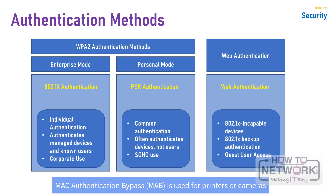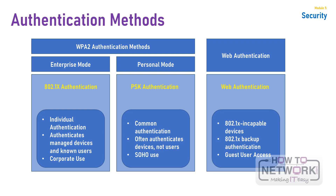Some consumer device manufacturers have attempted to bypass weak password choices by adding a method to automatically generate and distribute strong keys using a software or hardware interface, such as pushing a button or entering a short challenge phrase. The Wi-Fi Alliance standardized these methods in a program called Wi-Fi Protected Setup or WPS, formally called Wi-Fi Simple Config. However, WPS is not part of WPA2. Current security recommendations suggest that WPS should be avoided and turned off if present, because there are many known weaknesses and attacks against it.